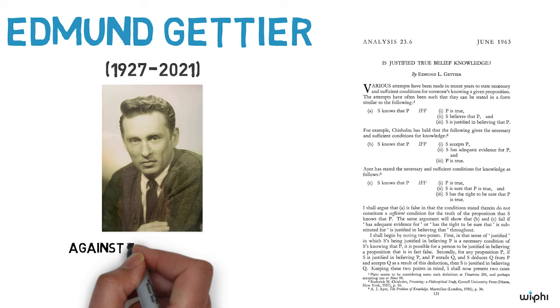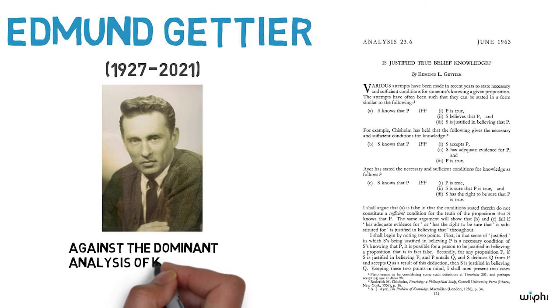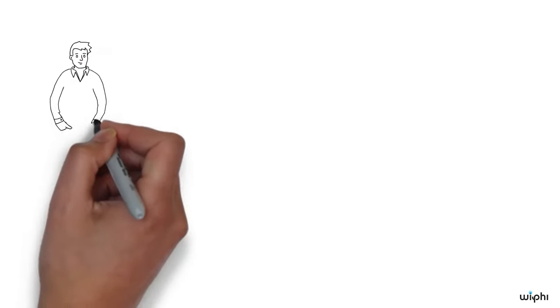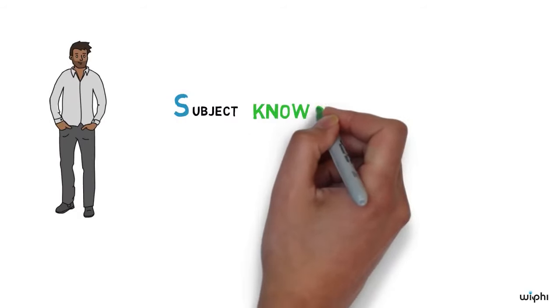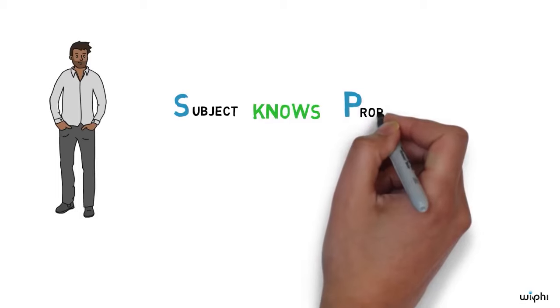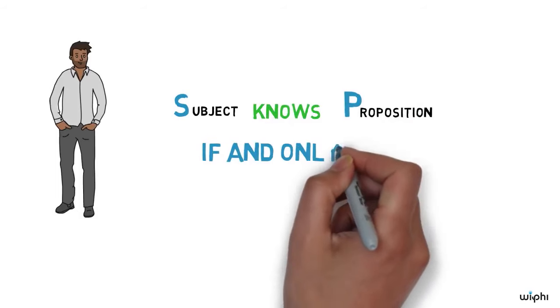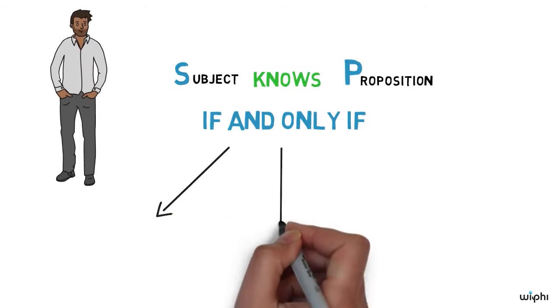In his paper, Gettier sets out to attack the dominant theories of knowledge of his day, which were committed to a three-part analysis or definition of knowledge. According to this analysis, a person or subject, conventionally called S, knows a proposition, let's call it P, if and only if the following three conditions all hold.